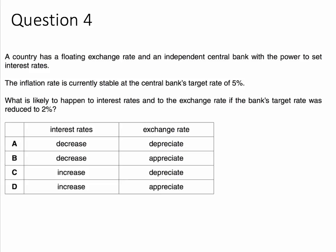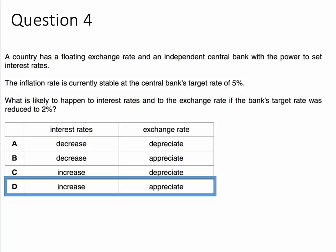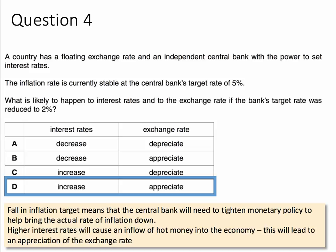So they've cut the inflation target for the central bank — the bank now has to be tighter on inflation. The likely answer is D: interest rates are likely to go up and the exchange rate will appreciate. A fall in the inflation target means the central bank will probably need to tighten monetary policy to bring the actual rate of inflation down from 5% to 2%. Interest rates will likely go up, and if interest rates go up, that's going to cause an inflow of hot money across the foreign exchanges, leading to an appreciation of the exchange rate. So the answer is D.